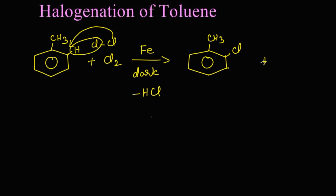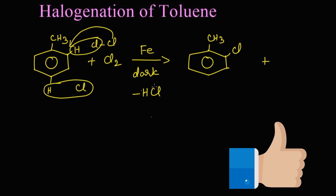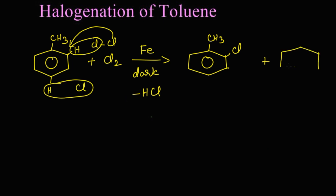There is another possibility: since toluene is also a para directing group, if the reaction takes place at the para position, the chlorine from the chlorine molecule and the para hydrogen leave as HCl, and we get para-chlorotoluene.